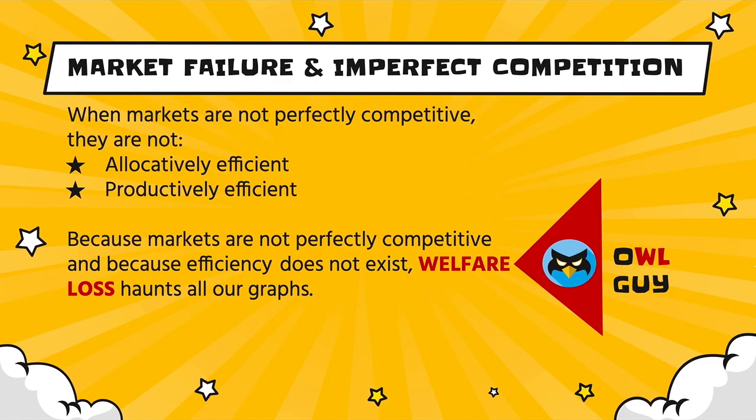If we're sticking with the superhero theme, our welfare loss — since it's WL — I found this little owl graphic. I will try to drop the owl in wherever we have welfare loss. We're going to have welfare loss throughout these graphs because of that situation of imperfect competition.